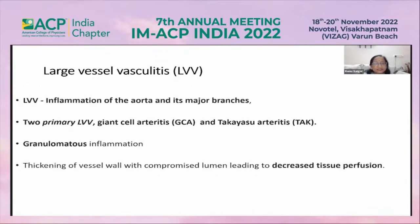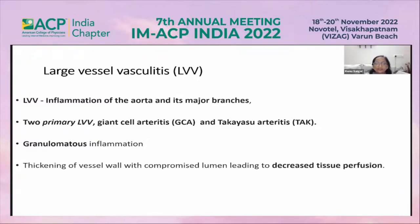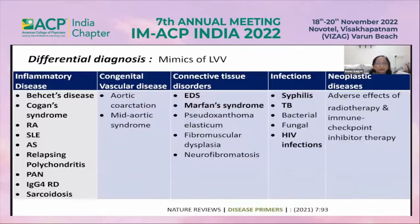Large vessel vasculitis means inflammation of the aorta and its major branches. There are two types: giant cell arteritis and Takayasu arteritis. In both, there is granulomatous inflammation and thickening of the vessel wall with compromised lumen, leading to decreased tissue perfusion.